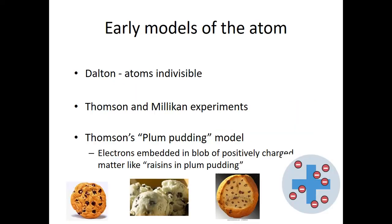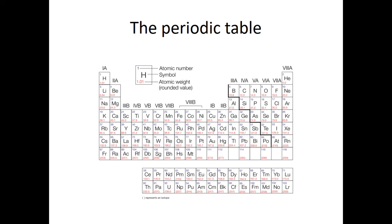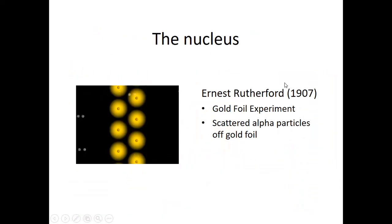And what Ernest Rutherford did is he sent helium particles or alpha particles into this gold foil. Now gold, if we go back to the periodic table real quick, you can see gold on our periodic table is right here, 79. So that tells me the atomic number 79. The atomic weight is almost 200. Helium has an atomic weight of four. So in Rutherford's gold foil experiment, he shot particles, these helium particles with a weight of four into gold with a weight of 200. So the gold was 50 times heavier than the helium.